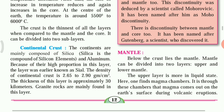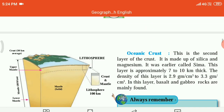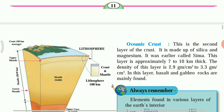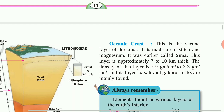The second type is the oceanic crust. It is made of silica and magnesium, and was earlier called SIMA. This layer is approximately 7 to 10 kilometers thick. The density of this layer is 2.9 to 3.3 grams per centimeter cube. In this layer, basalt and gabbro rocks are mainly found.